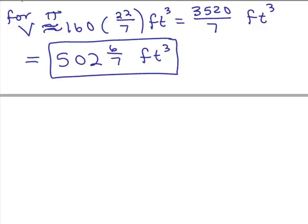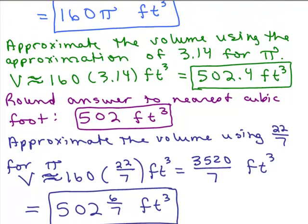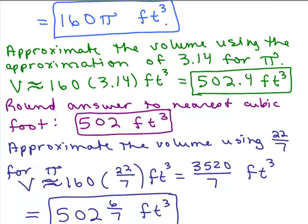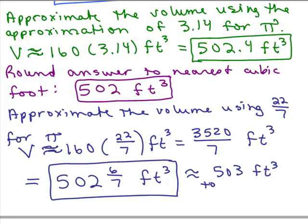So now we've done this problem a few ways here. Here's the exact answer, 160π cubic feet. Here's an approximation using 3.14 for π. Here's if I happen to round it to the nearest cubic foot. And here's the interesting part. When I use 22/7, notice that I got 502 and 6/7. If I rounded that, it would give me 503 cubic feet.